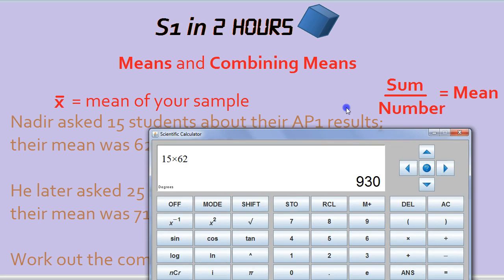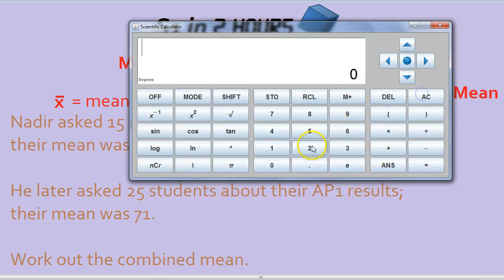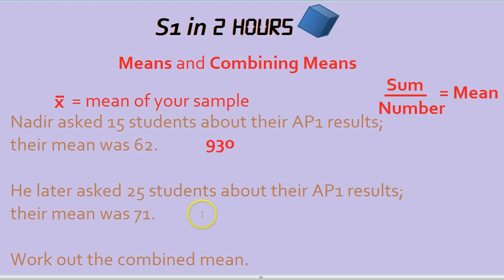What about the total score of these 25 students? Well, there's 25 of them, their average was 71, so their total score was 1775.